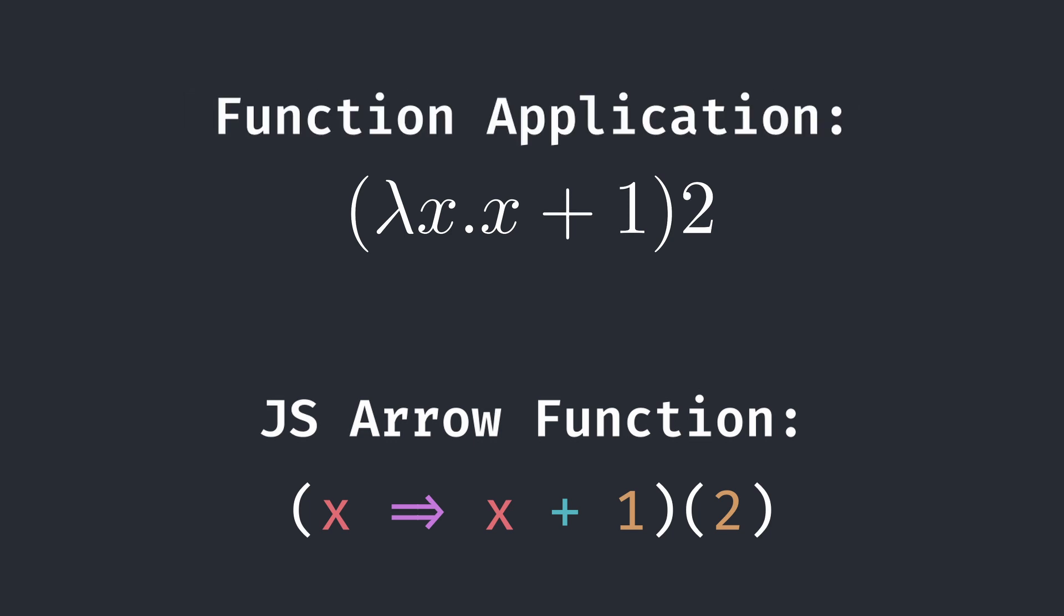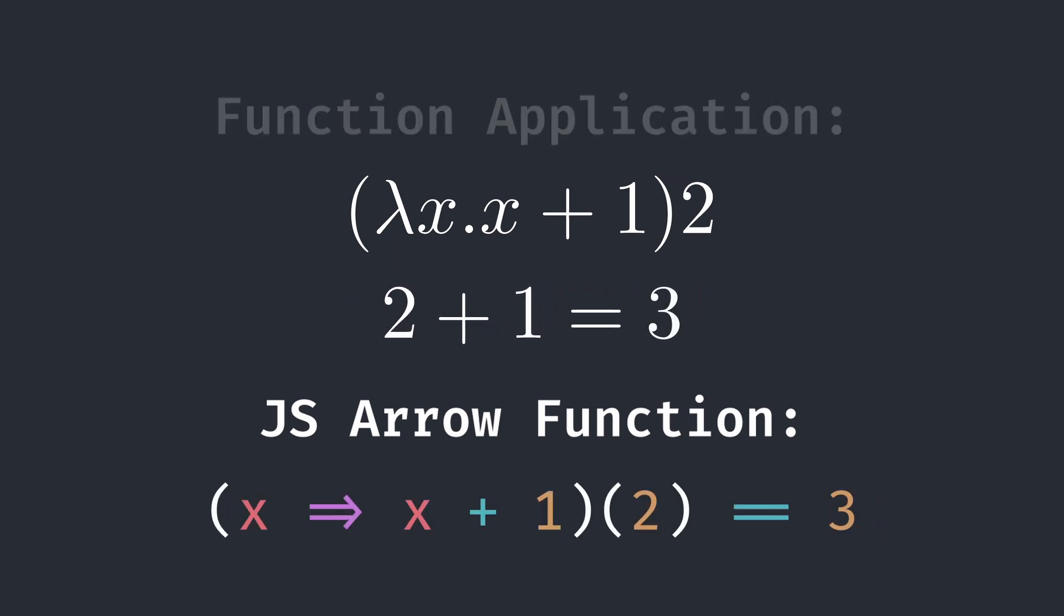Parentheses, as usual, can be used for clarity or to show the order of applications. Otherwise, applications are bound left to right. We will evaluate this expression by substituting all instances of the bound parameter in the body with our input. This process is known as a beta reduction.